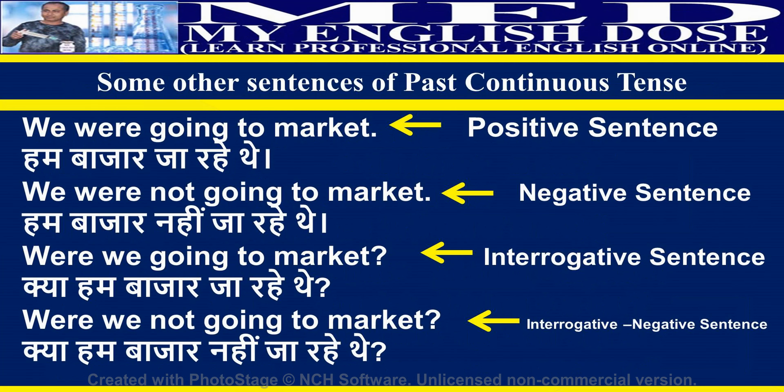Past continuous tense — four types of sentences: We were going to market (positive). We were not going to market (negative). Were we going to market? (interrogative). Were we not going to market? (interrogative negative).